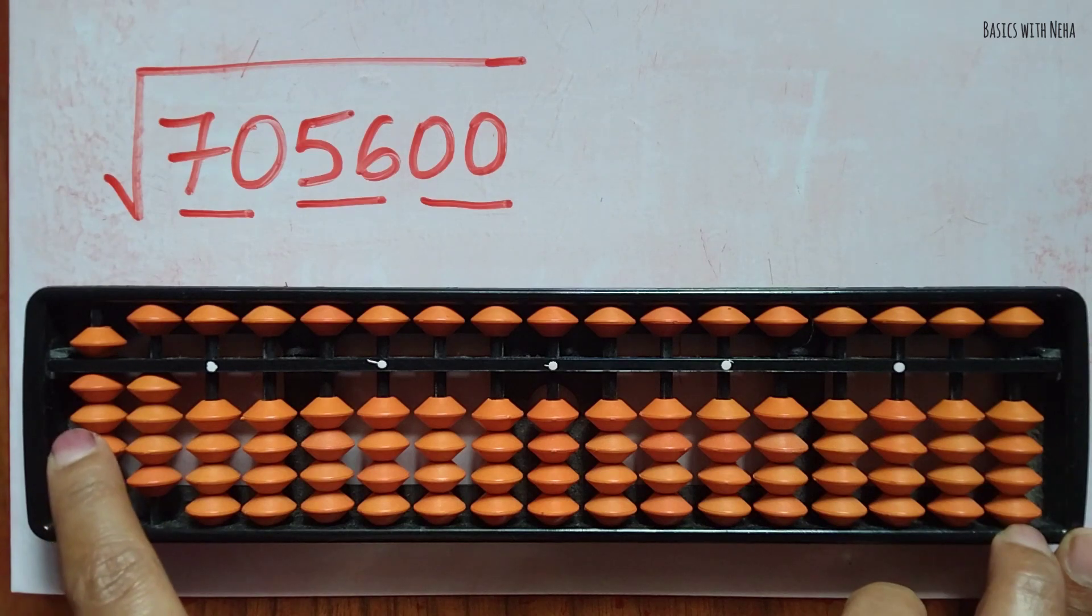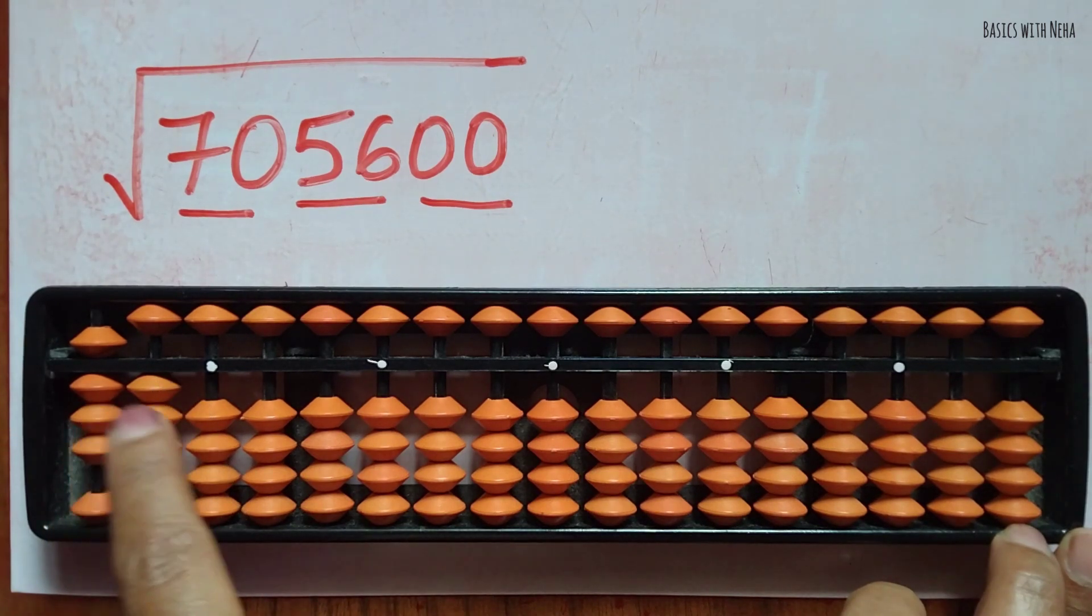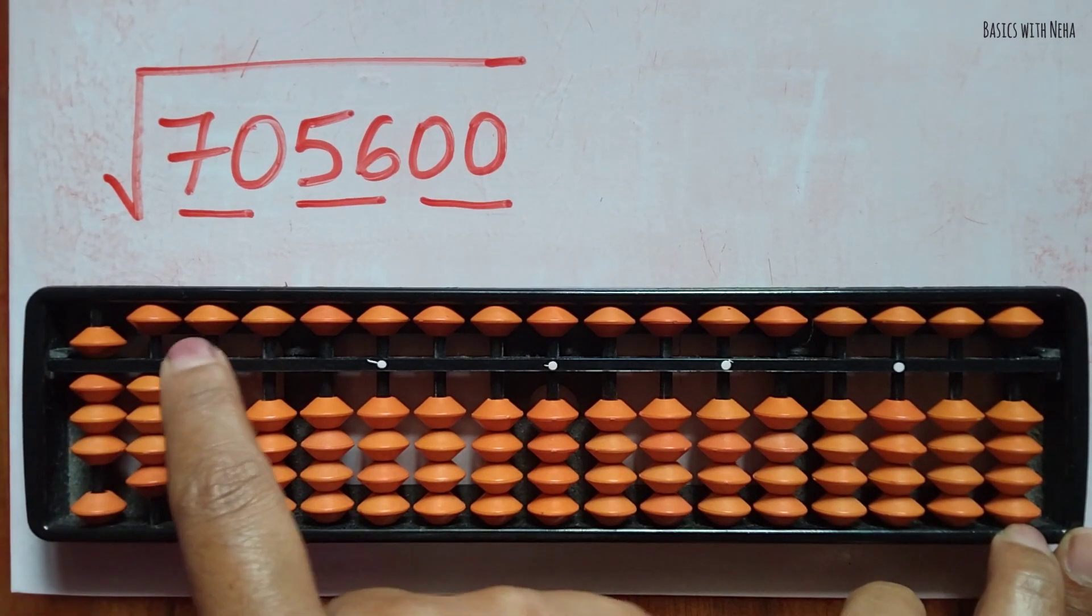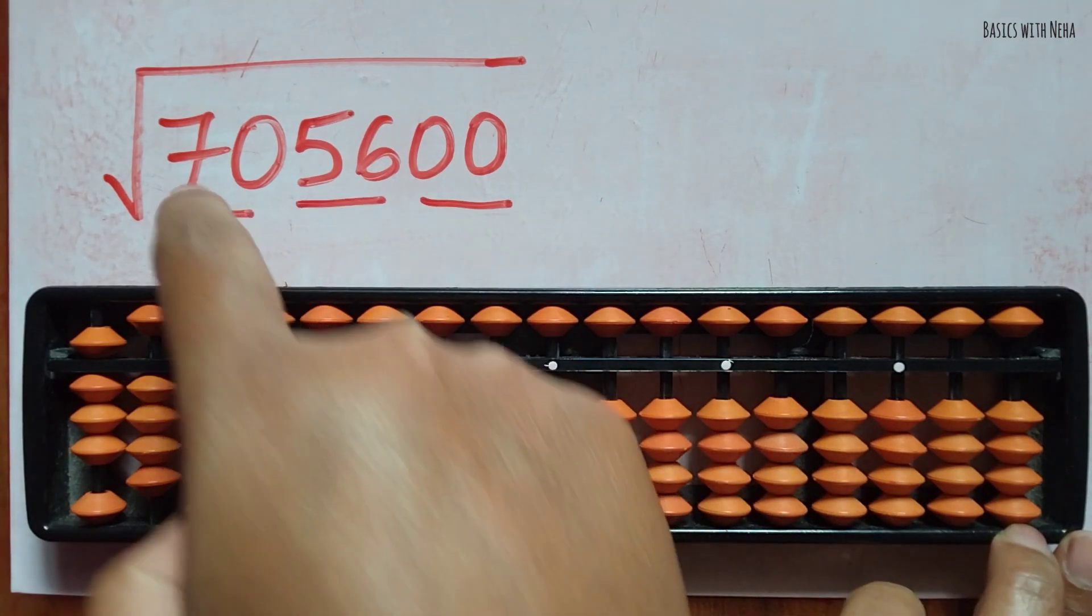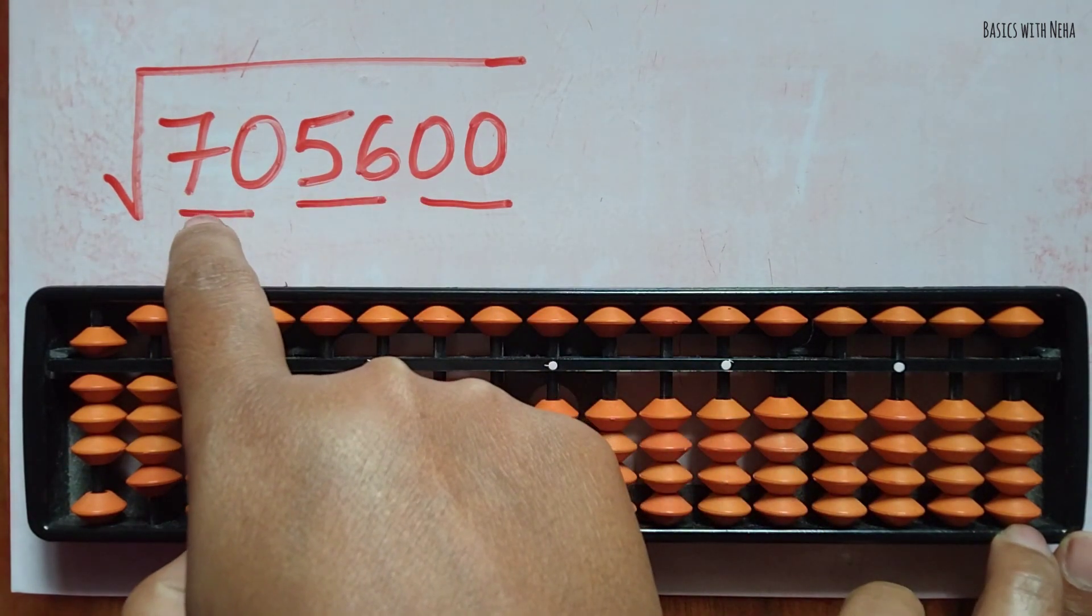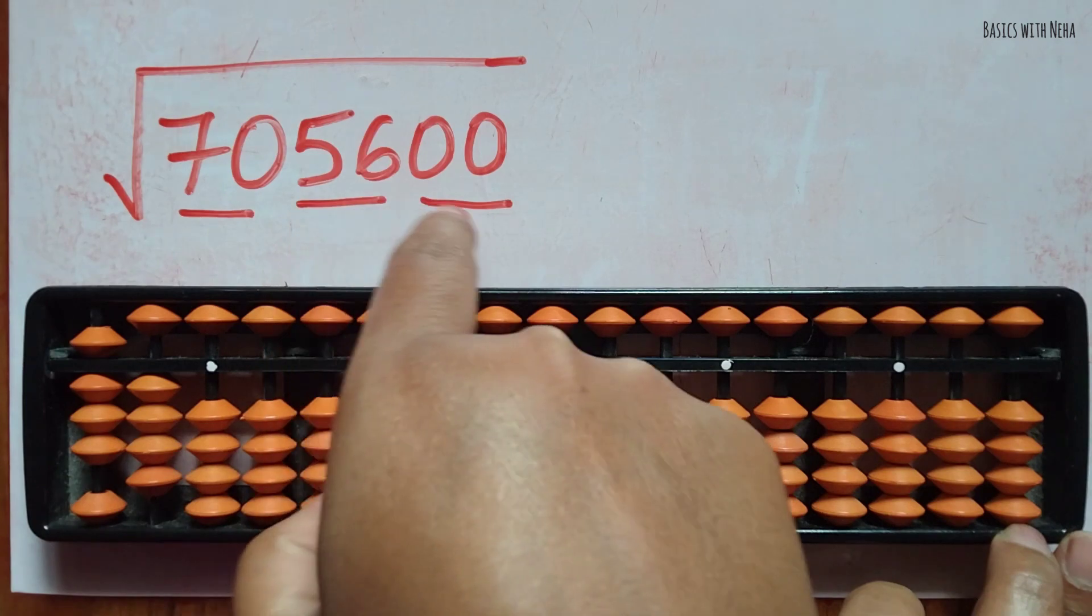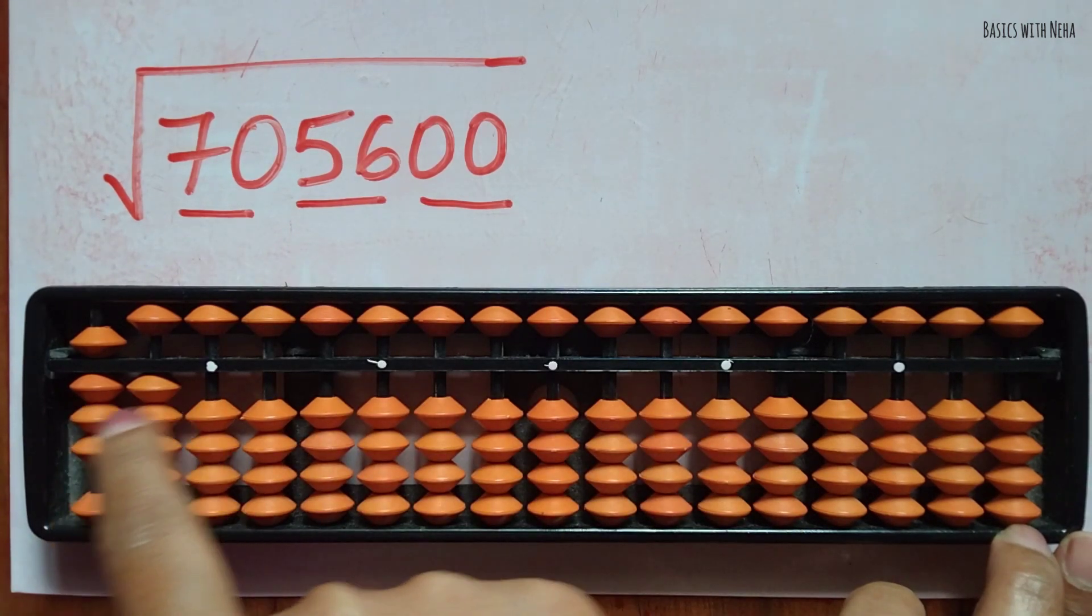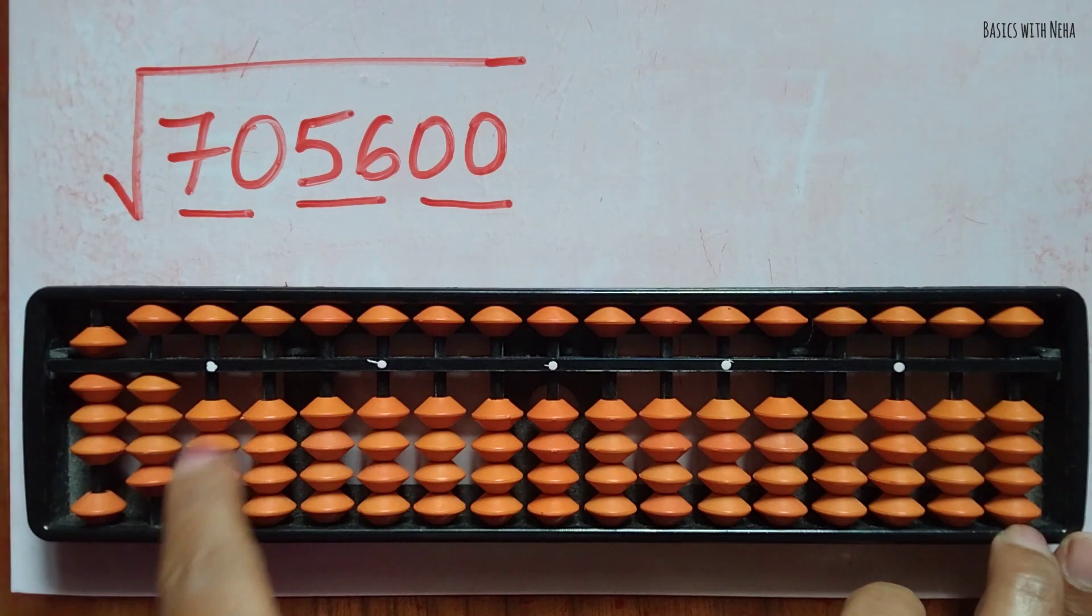So we have an answer: 840. Now, since we had grouped it like this, two, two, and two, we know that the answer comes in three rods—one, two, and three. So we already got the answer, that is 840.